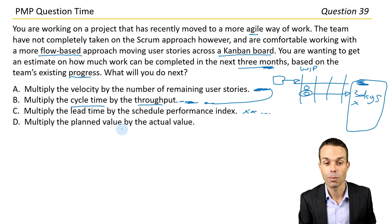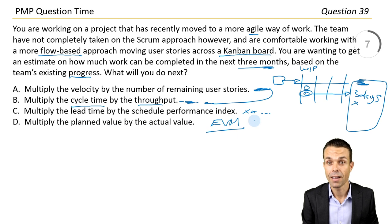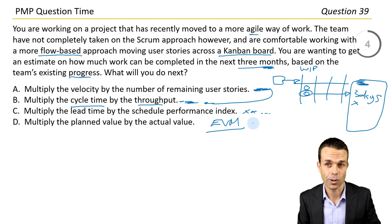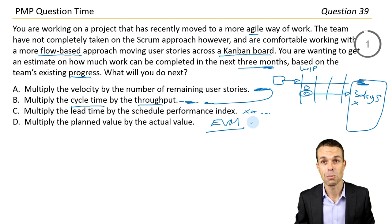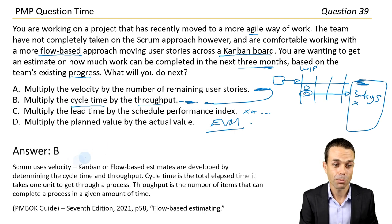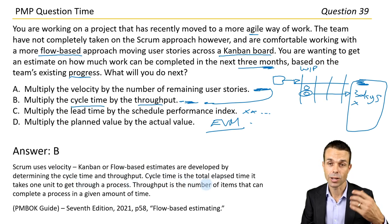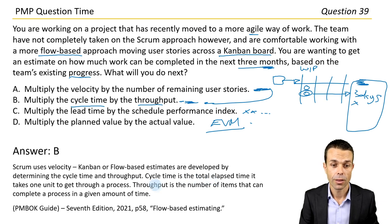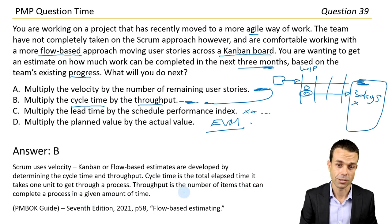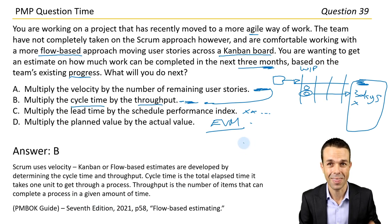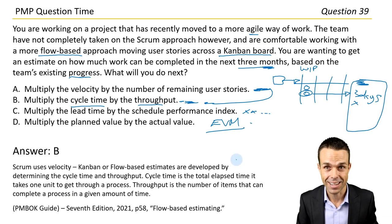Multiplying the lead time by the schedule performance index is a red herring. Multiplying the planned value by the actual value is earned value management — relevant for other scenarios but not this one. Answer B. Scrum uses velocity. Kanban or flow-based estimates are developed by determining the cycle time and throughput. Cycle time is the total elapsed time it takes one unit to get through a process; throughput is the number of items that can complete a process in a given amount of time. Page 58 under flow-based estimating.